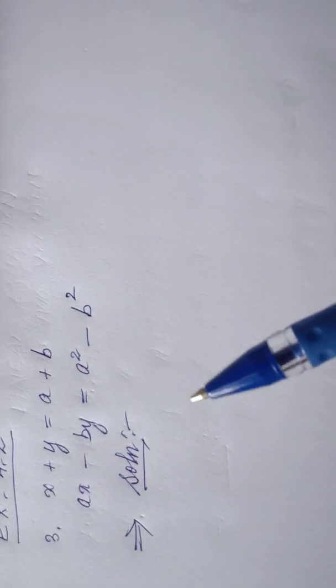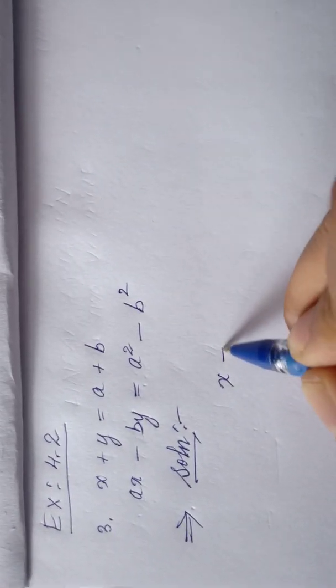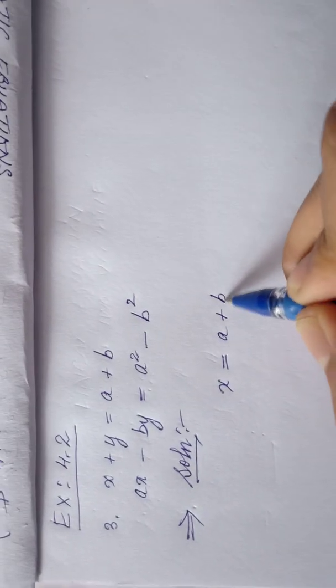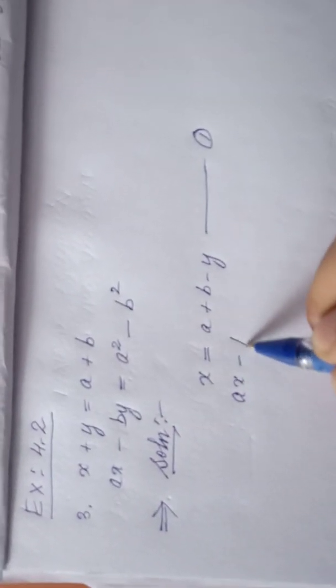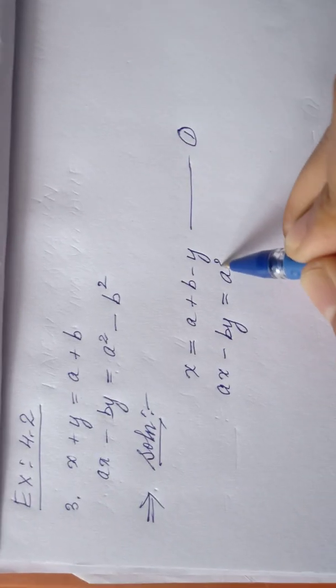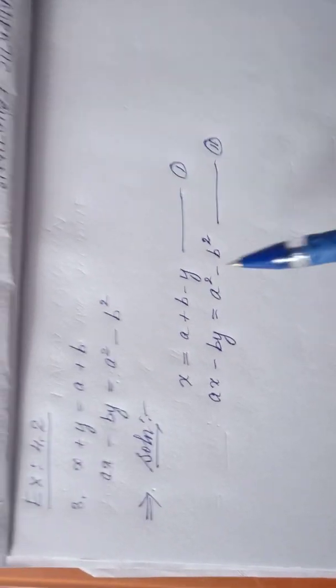So let's see. First we have the first equation: x plus y equal to a plus b. In this case I will put x equal to a plus b minus y — this is equation one. The equation two will remain the same: ax minus by equal to a squared minus b squared — this will be equation two.